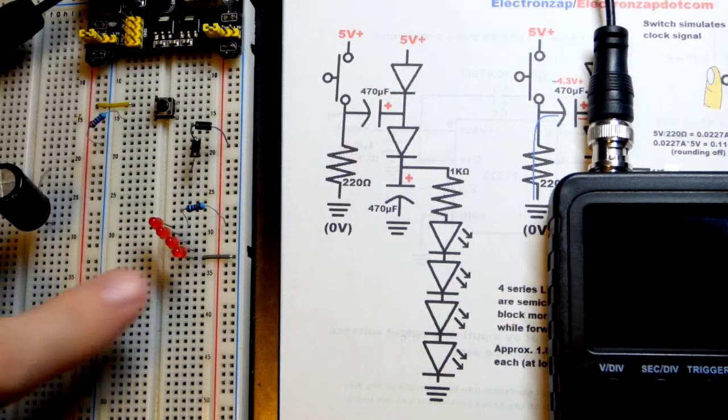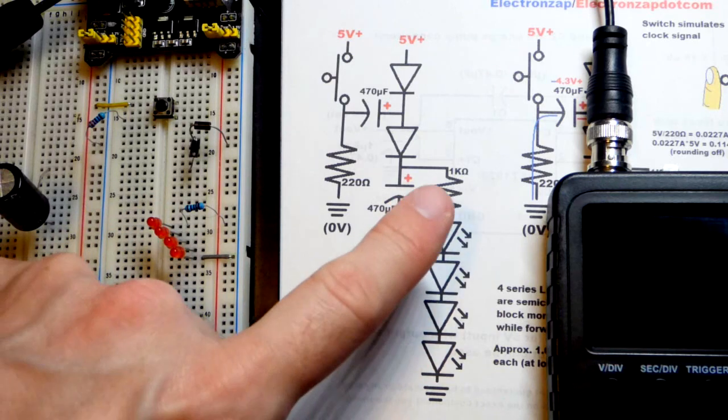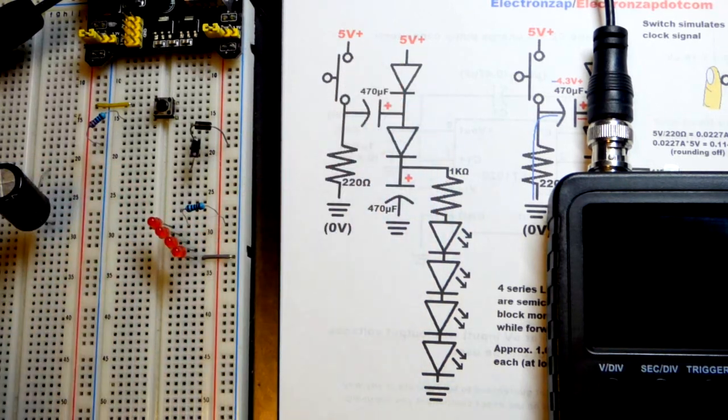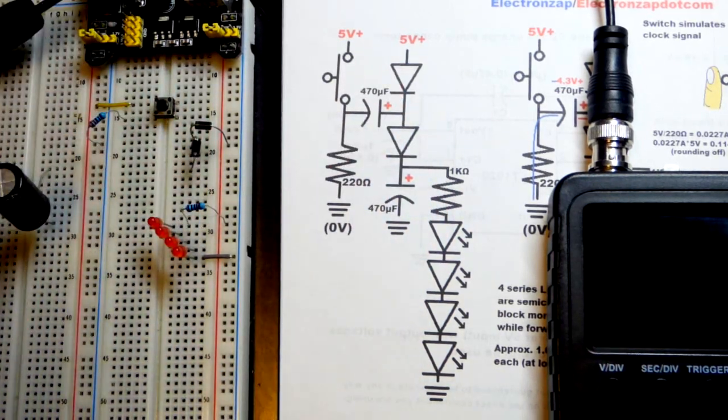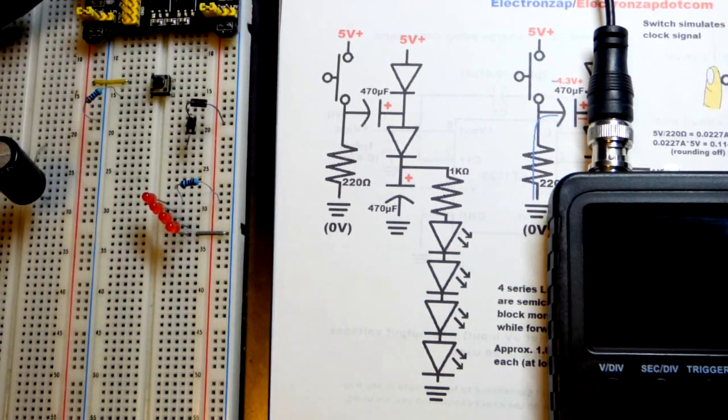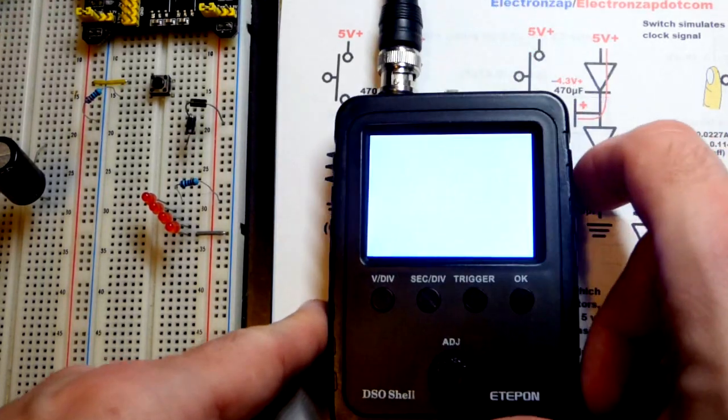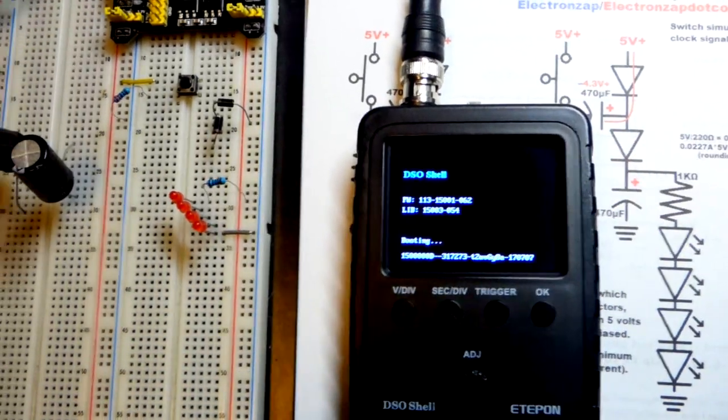In this video we want to light four series LEDs. The protective resistor goes directly to the five volt power supply. Right now with five volts, the LEDs are not lit up.